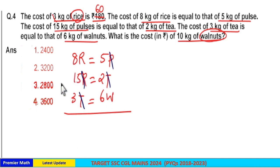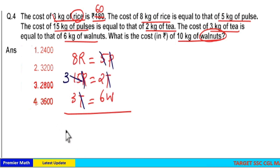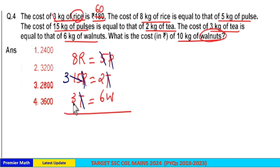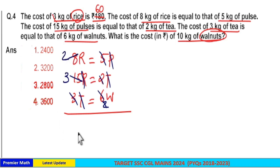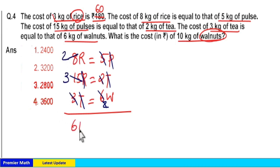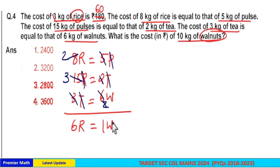Here 5 goes 3 times in 15, and 3 goes 2 times in 6. 2 into 2 is 4, and 4 goes 2 times in 8. So the remaining ratio gives us: 6 rice is equal to 1 walnut.